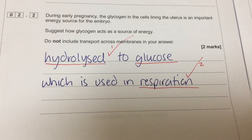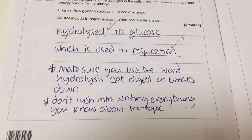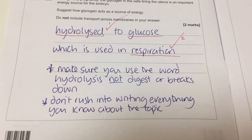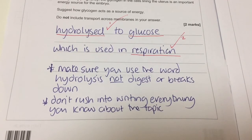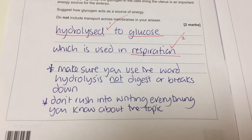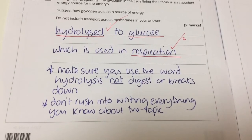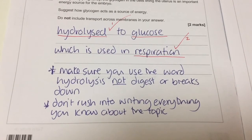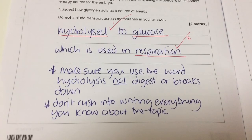Many students lost marks because they talked about the hydrolysis releasing the energy, rather than the products of hydrolysis being used for respiration. Another common mistake was rushing into answering without reading carefully — many students started with reference to branching molecules providing many ends for enzymes, which is true but not relevant to the question. My top tip is to use A-level terminology — hydrolysis, not breakdown — and make sure you actually answer the question rather than writing everything you know about the topic.